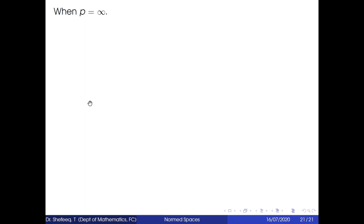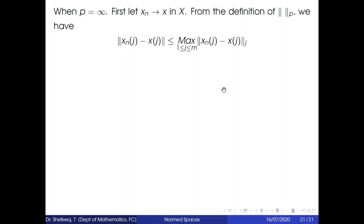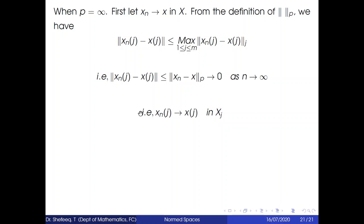When p = ∞, first assume x_n → x in X. From the definition of ‖·‖_∞, ‖x_n(j) − x(j)‖_j ≤ max_j{‖x_n(j) − x(j)‖_j} = ‖x_n − x‖_∞. Since ‖x_n − x‖_∞ → 0 as n → ∞, this means x_n(j) → x(j) in X_j for every j.